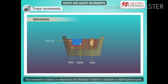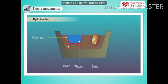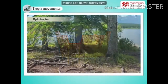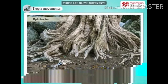The movement of plants in response to the stimulus of water or moisture is called hydrotropism. Take a look at this setup. You can see that the bean seed here has its root growing towards water. Water is the stimulus here that has led to this directional growth movement of the root. Watch these visuals to understand hydrotropism better.